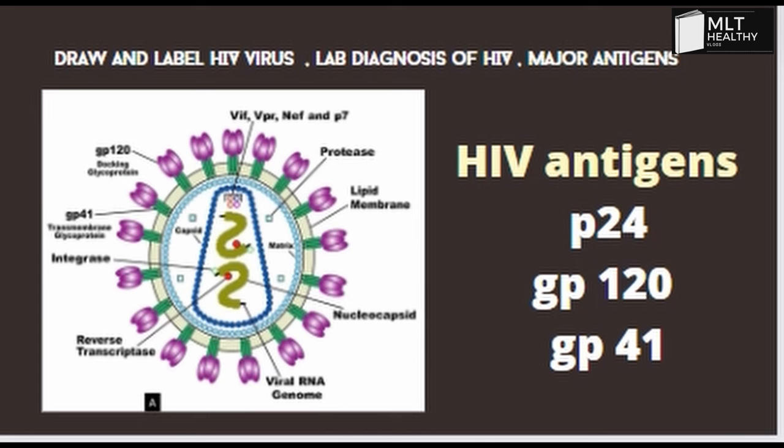The HIV virus has GP120 and GP41 as the major antigens. If you choose a diagram, you need to draw and label it.